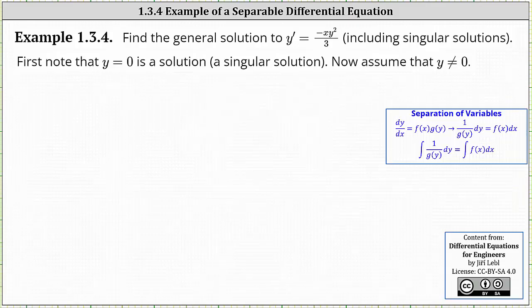We're asked to find the general solution to y prime equals negative xy squared divided by three, including these singular solutions. To begin, notice that y equals zero is a solution called a singular solution.